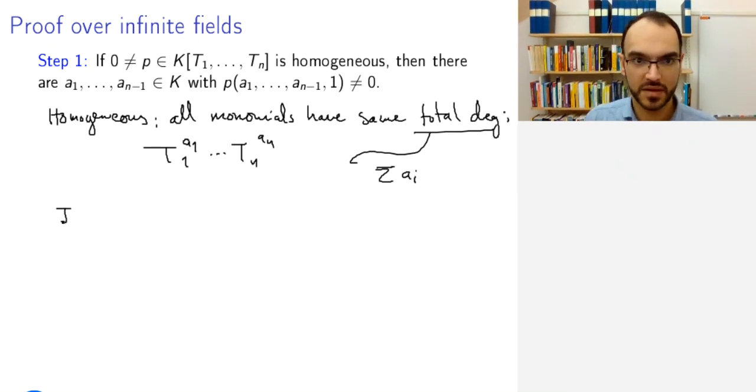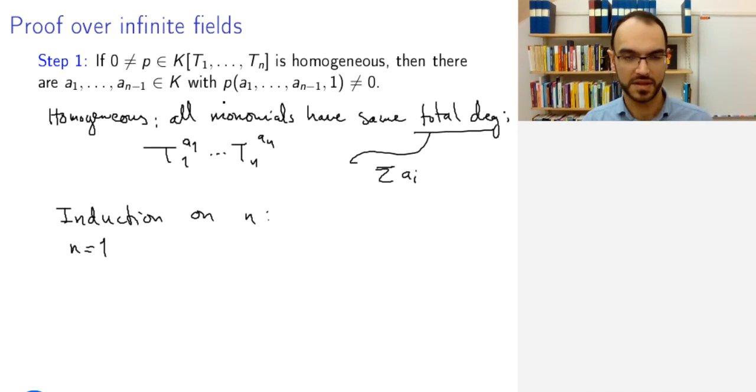Okay, so we'll prove by induction on n that this step holds. The case n equals 1 is the easiest. Why is that? Well, of course it's the easiest, but why is it actually easy? It's because if you have a polynomial in one variable that is homogeneous, then it has only one monomial.